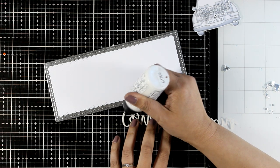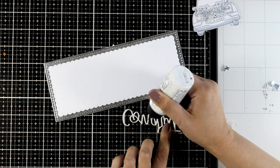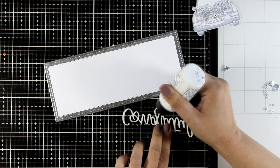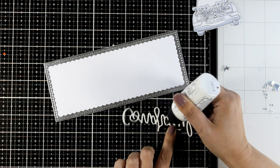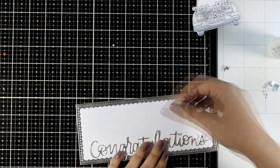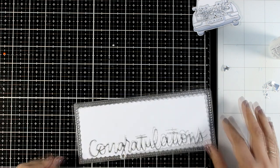I also cut out from the same silver cardstock the word congratulations and I love how big it is. It extends from one side of the slimline card all the way to the other side and makes a big impact.